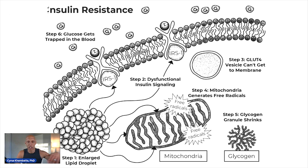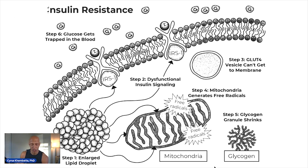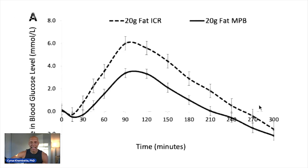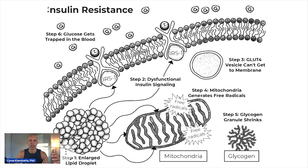In addition to that, this enlarged lipid droplet starts to create free radicals at the level of the mitochondria. The mitochondria gets stressed and starts to produce more reactive oxygen species, which become an inflammatory signal, putting the mitochondrial network in a state of distress. As a result, less glycogen becomes usable as a fuel source. The glycogen granule begins to shrink, and this process unfolds in a negative direction simply because there's excess fat in the cellular environment causing multiple cellular dysfunctions.